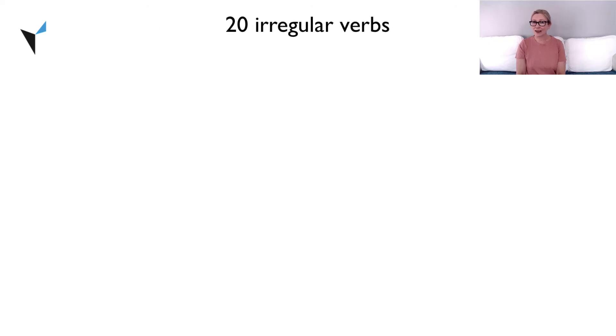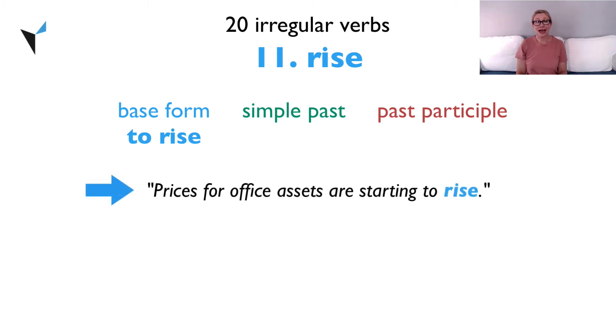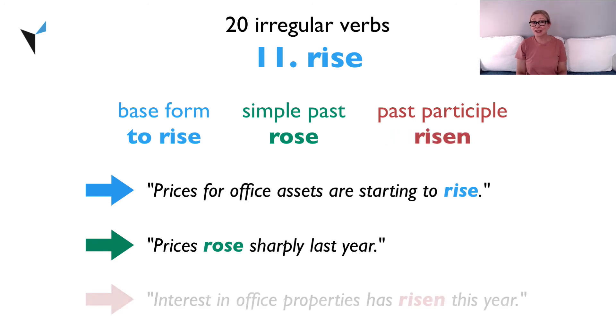On to verb 11, rise. The base form is to rise. Prices for office assets are starting to rise. The simple past is rose. Prices rose sharply last year. And the past participle is risen. Interest in office properties has risen this year.